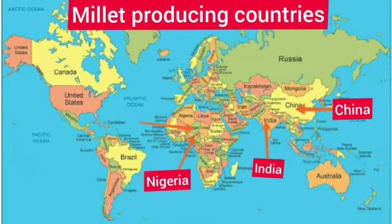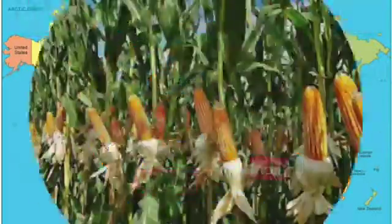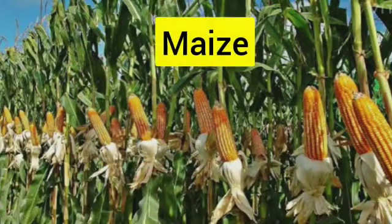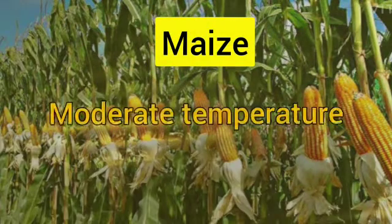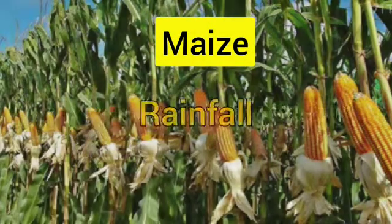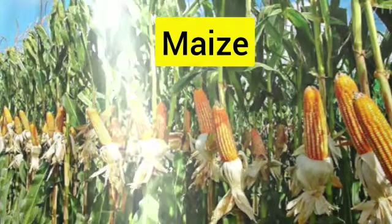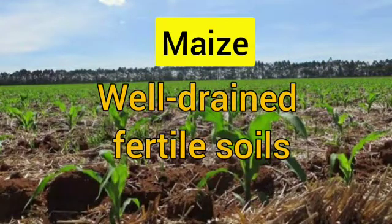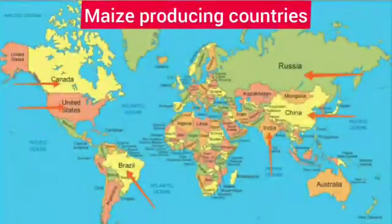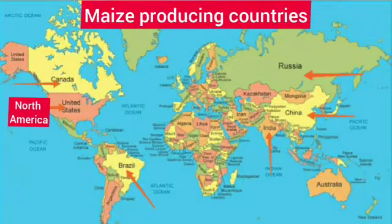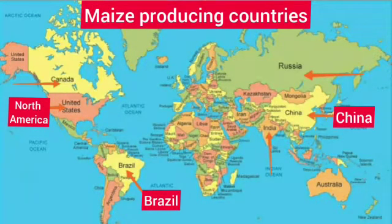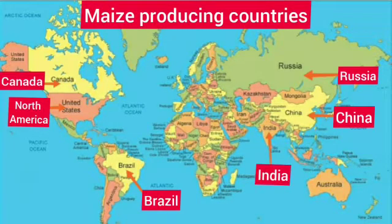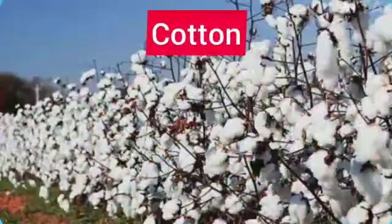Next is maize. It requires moderate temperature, rainfall, and lots of sunshine. It needs well-drained fertile soils. It is mainly grown in North America, Brazil, China, Russia, India, and Canada.